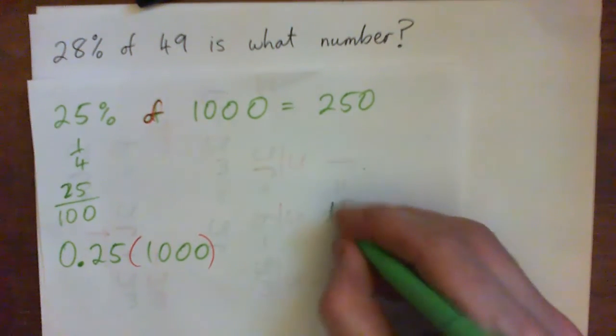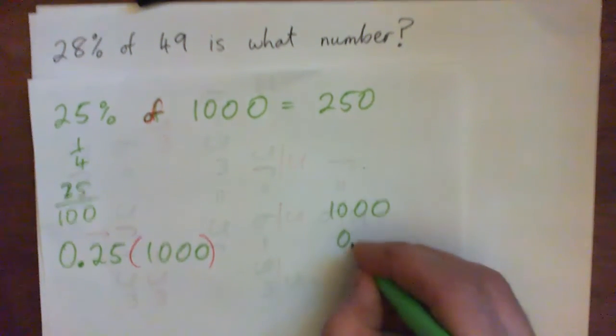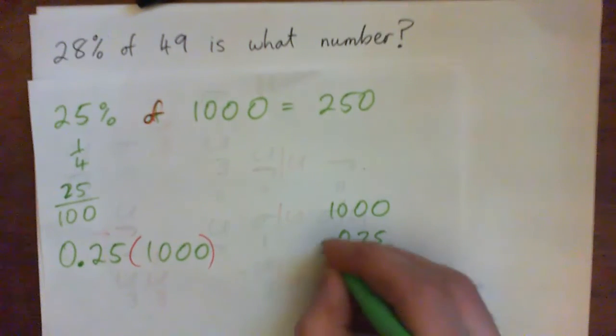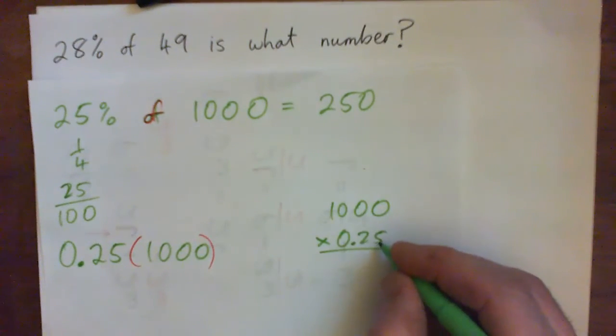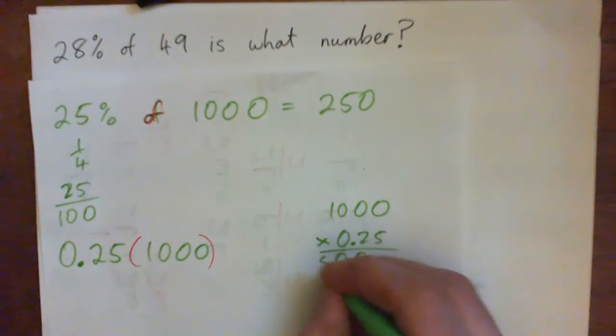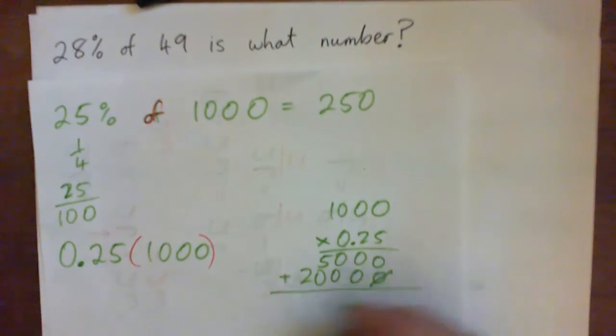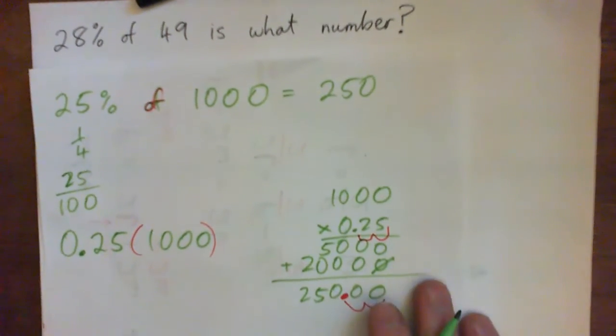And if we were to do that, it would look like this, 1,000, 0.25, you'd multiply, and 5 times 0 is 0, and 0, and then we get a 0, and we get a 5, and then put down a 0, multiply by 2, 0, 0, 0, and 2 times 1 is 2, and add, and this is doing the long way, 1, 2, 3, and then there's 2 decimal places in the question, so we need 2 in the answer, and that's 250.00.